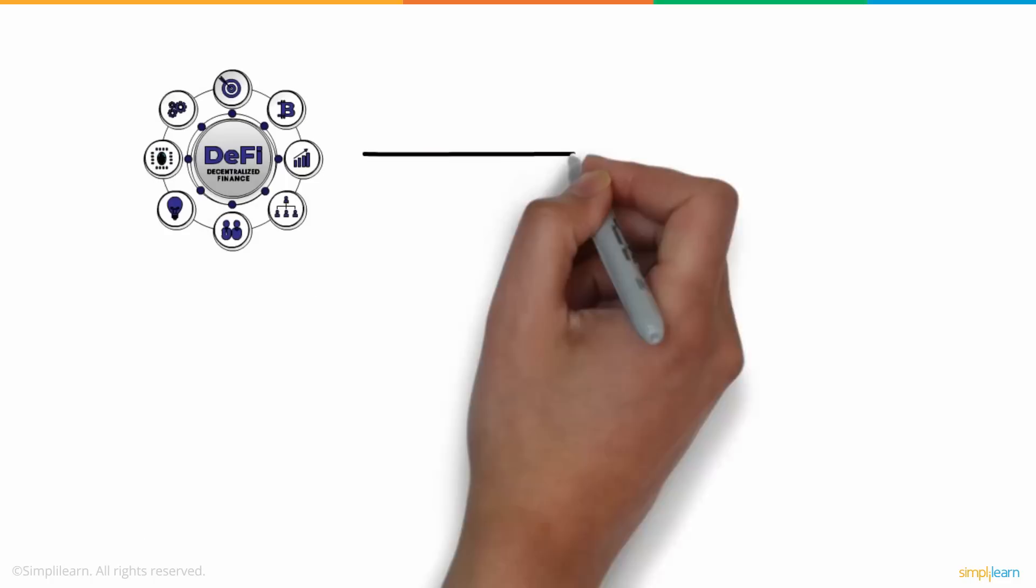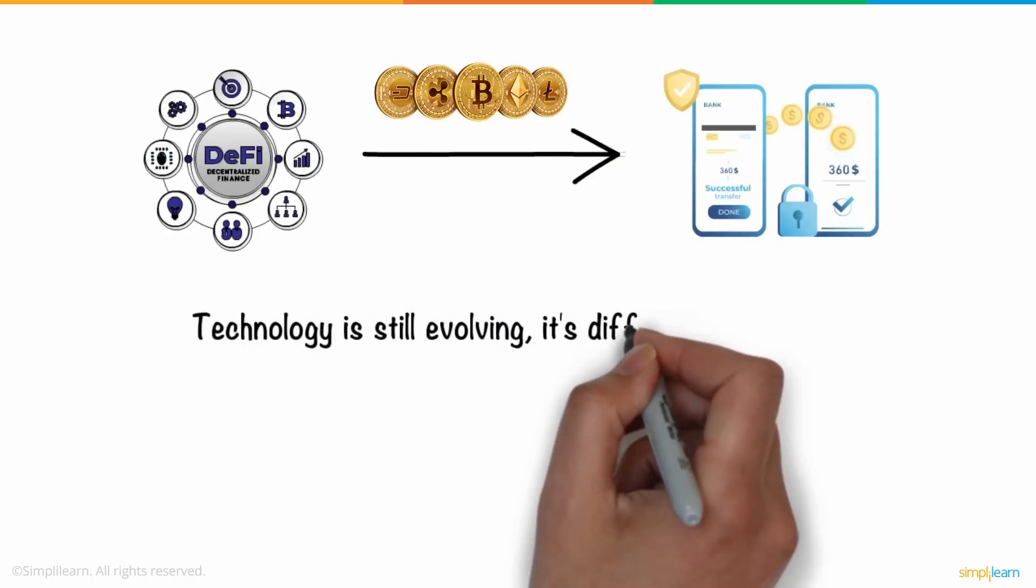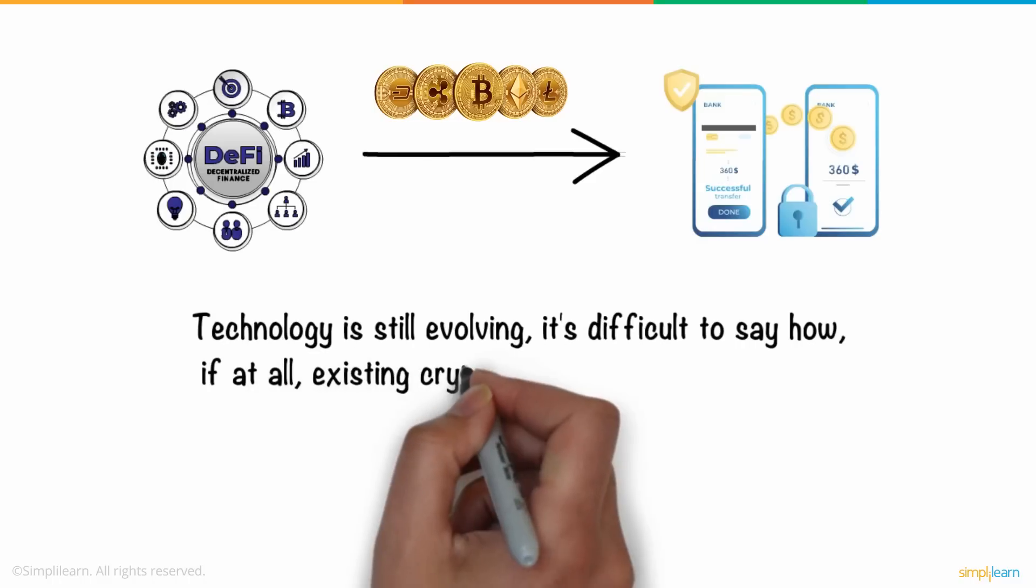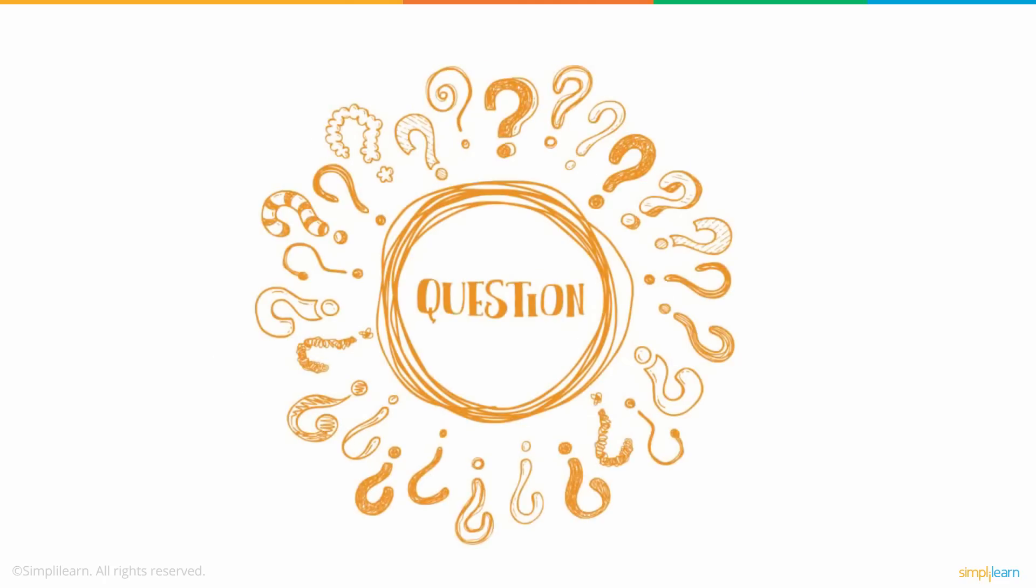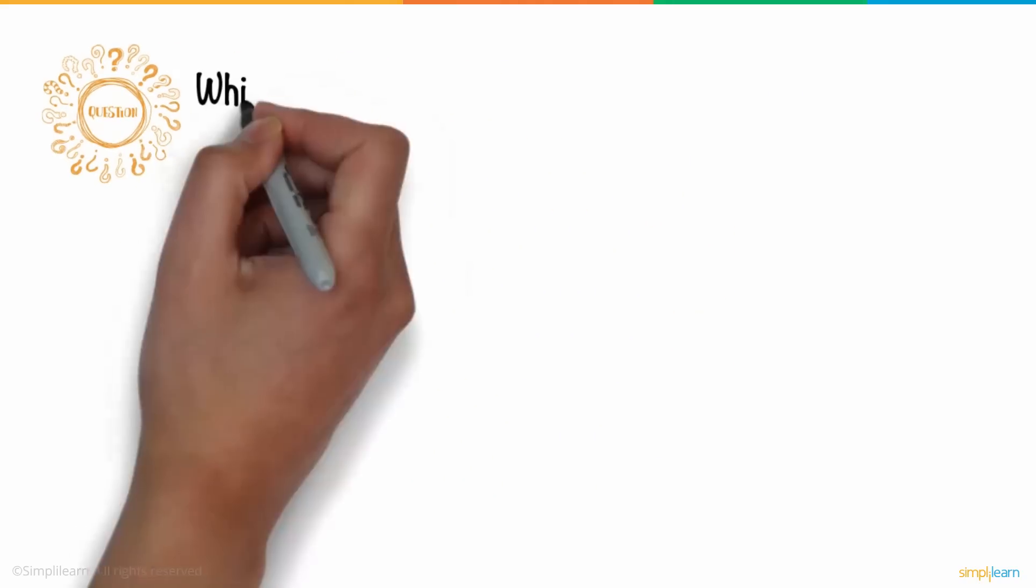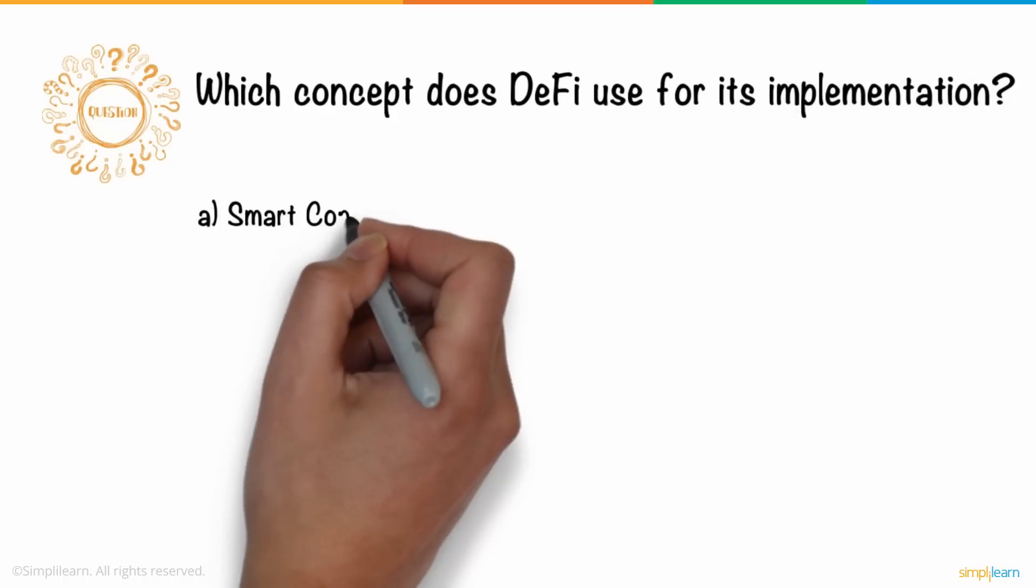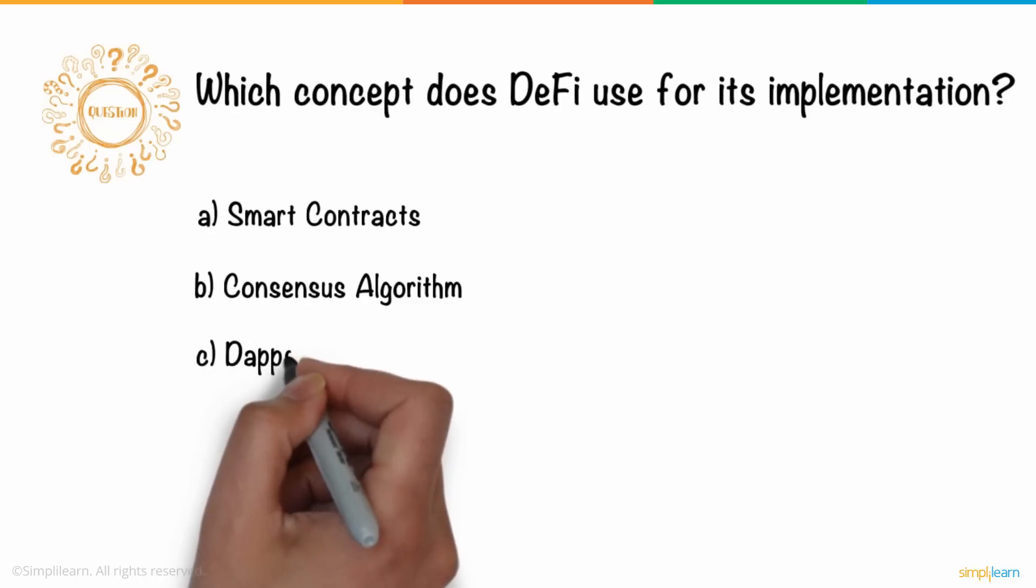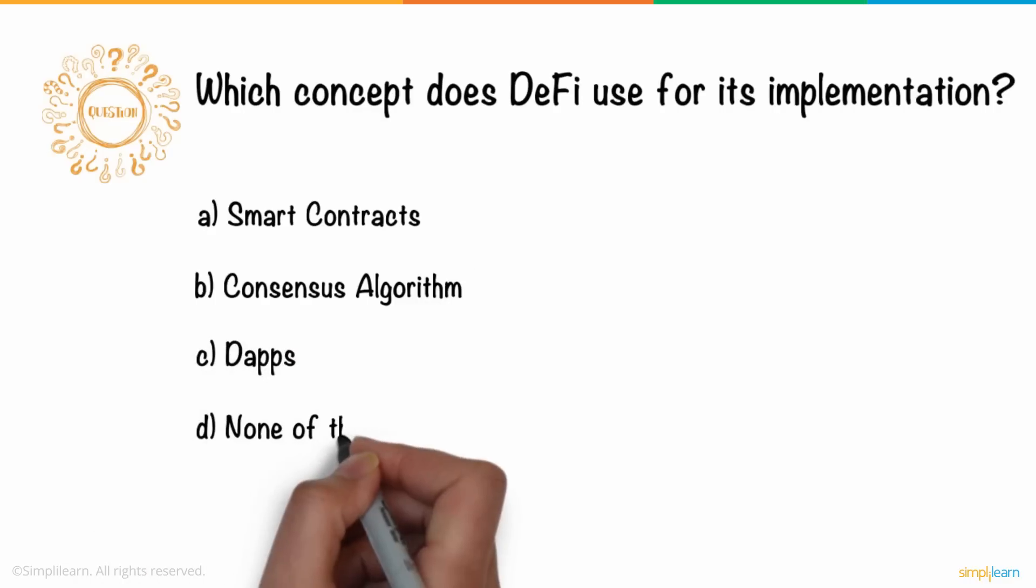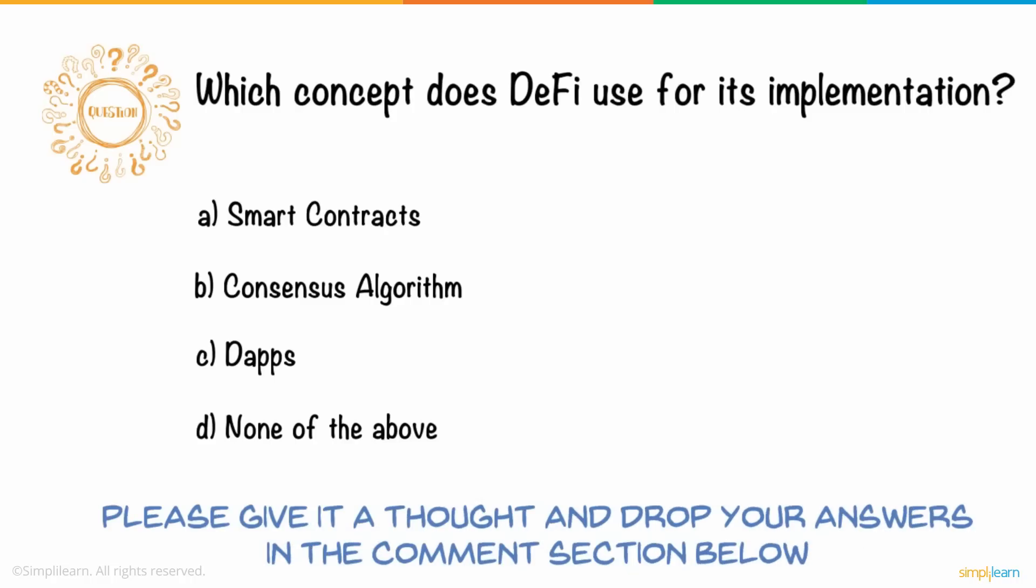DeFi is meant to conduct transactions using cryptocurrency. Because technology is still evolving, it's difficult to say how, if at all, existing cryptocurrencies will be applied. So, here's a question for you. Which concept does DeFi use for its implementation? A. Smart contracts B. Consensus algorithm C. Dapps D. None of the above. Please give it a thought, and drop your answers in the comments section below. Three lucky winners will receive Amazon gift vouchers.